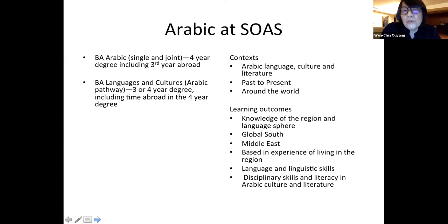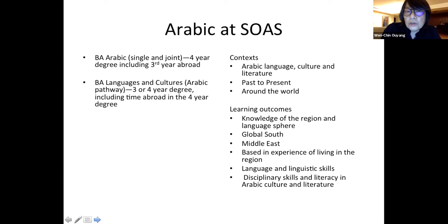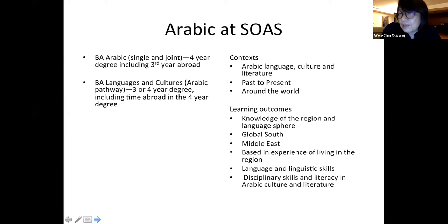We have two kinds of programs in which Arabic is included at the undergraduate level: BA Arabic, whether as a single subject or joint degree, which is a four-year degree including a third year abroad in one of the Arab countries. It is also part of BA Languages and Cultures Arabic pathway, which can be three or four years. We teach Arabic in three contexts: Arabic language, culture, and literature, from past to present. We do classical Arabic as well, and we look at the development of Arabic around the world.